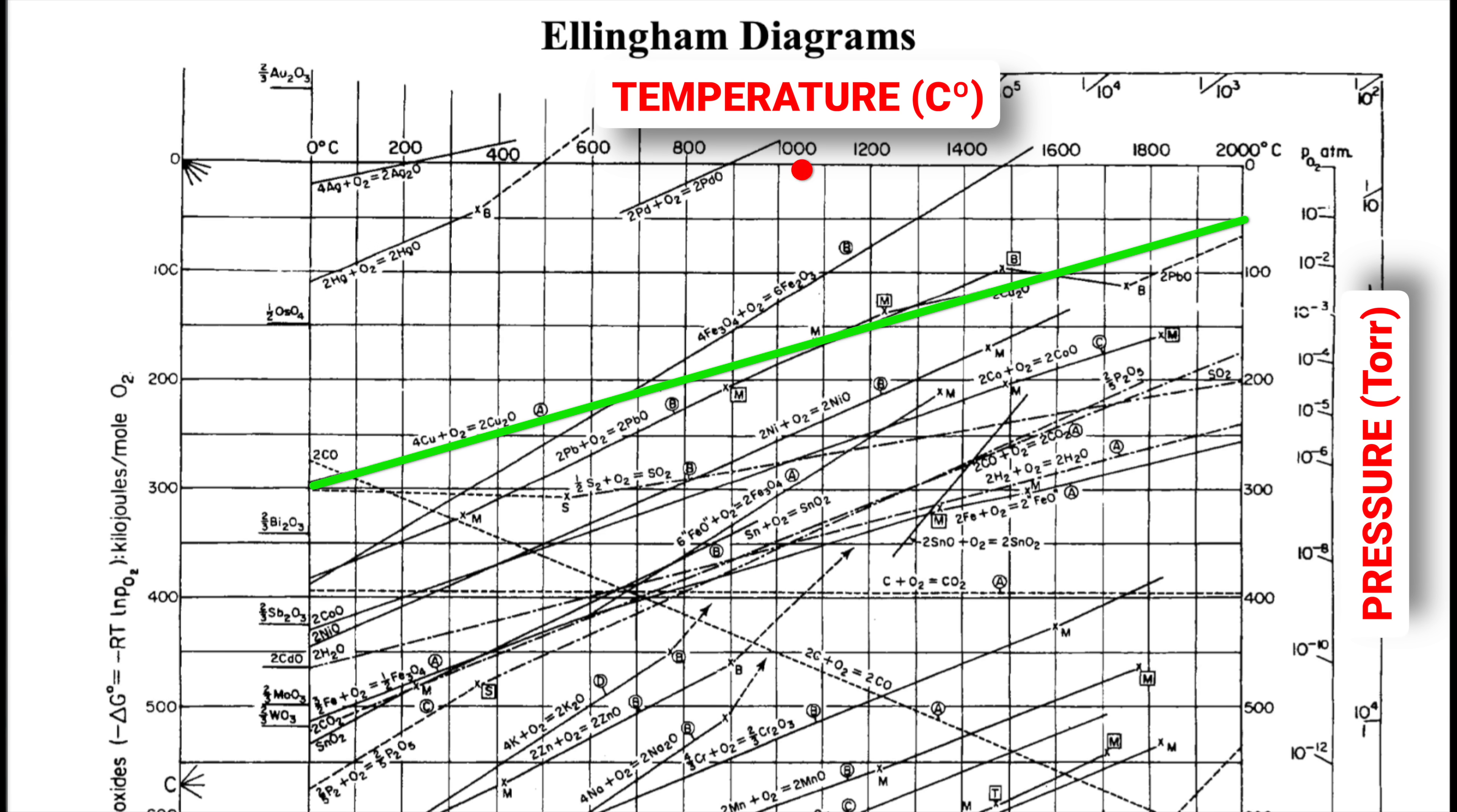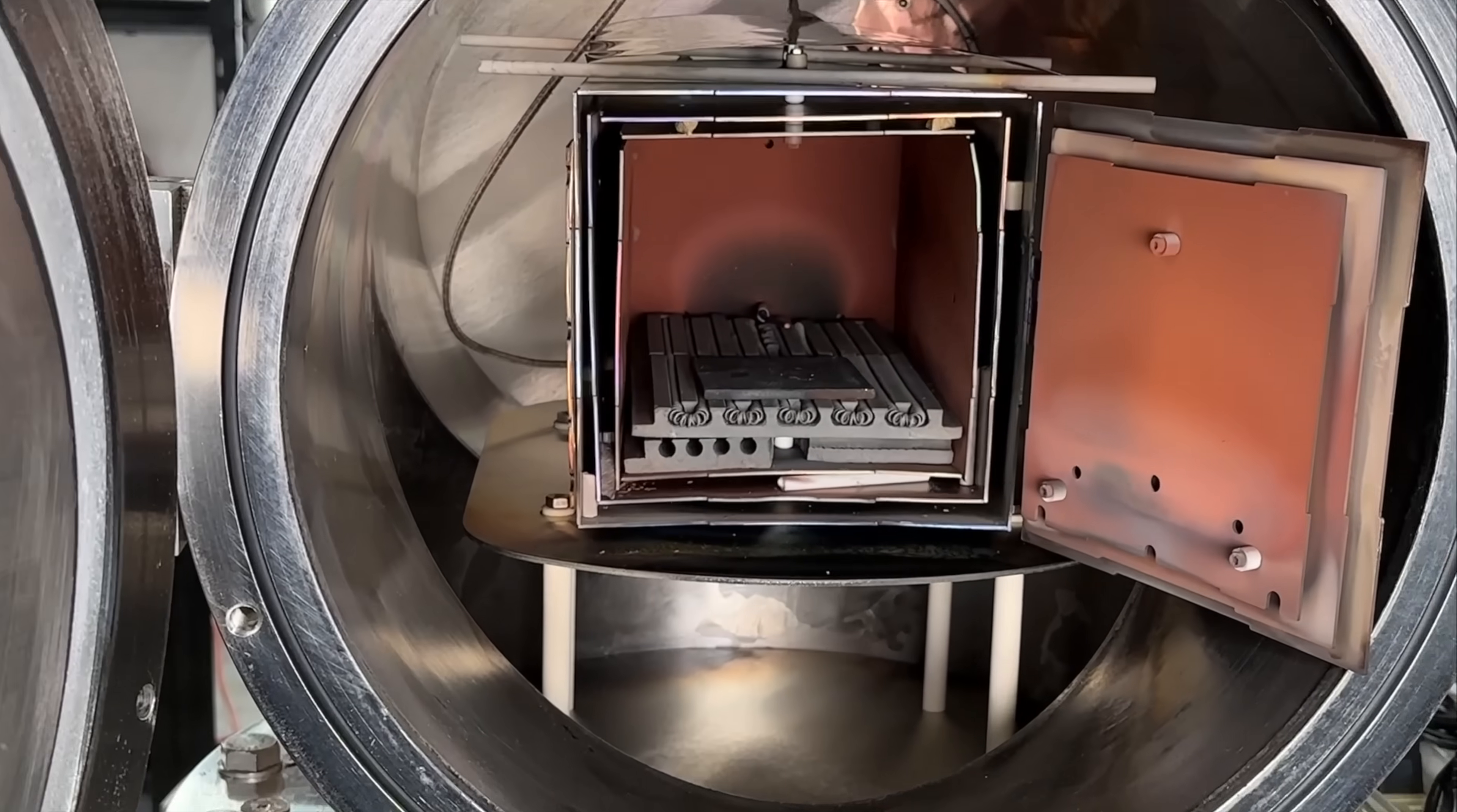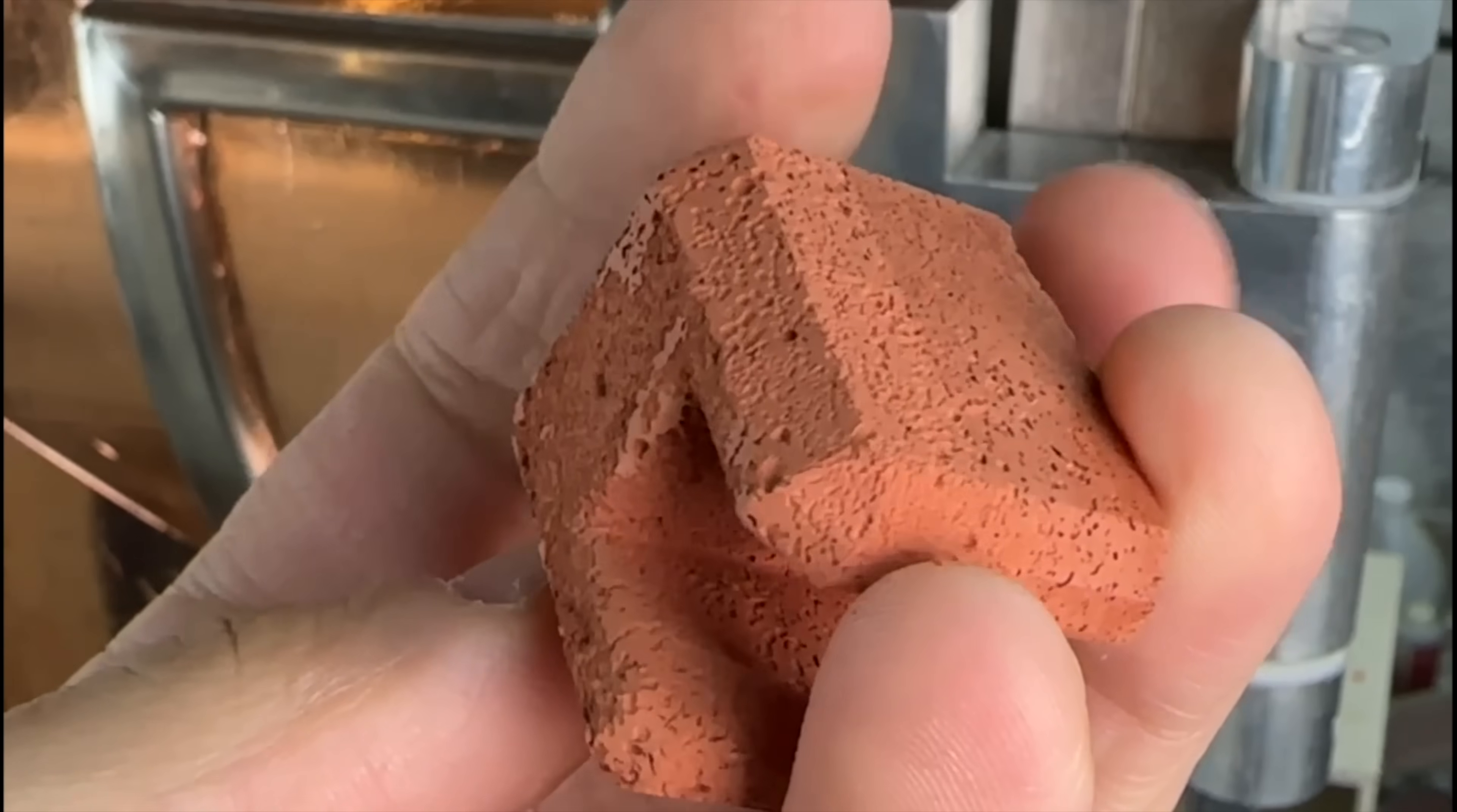To achieve this for copper you can see that we need a temperature of roughly 1070 degrees Celsius at a pressure of 10 to the minus 4 torr or lower. So in other words not only do we sinter our copper we also purify it in the process which is why the dirty oxidized samples that go in come out looking like pure shiny copper.